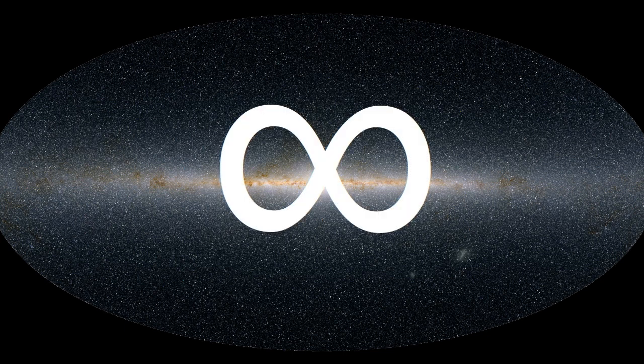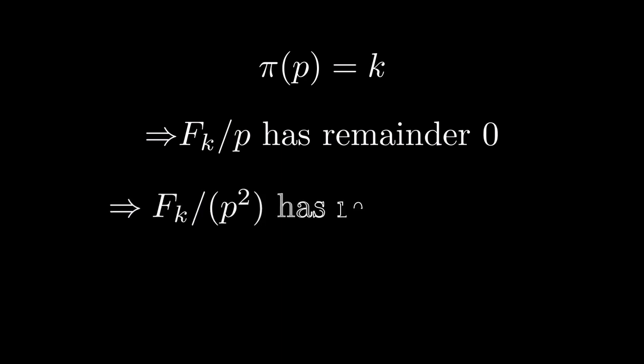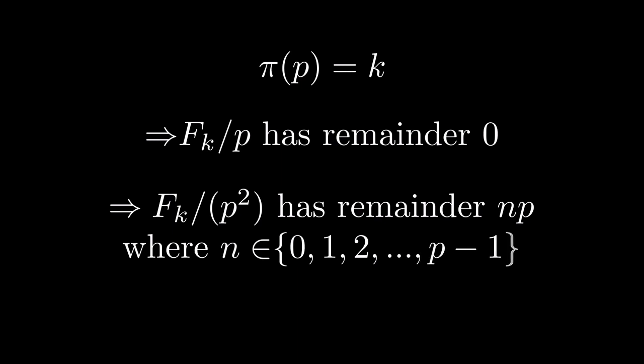It goes like this. If a prime p has a Pisano period of k, then the kth Fibonacci number, which we write f sub k, has remainder 0 when you divide it by p. That means that its remainder when you divide it by p squared is some multiple of p, between 0 times p and p-1 times p.